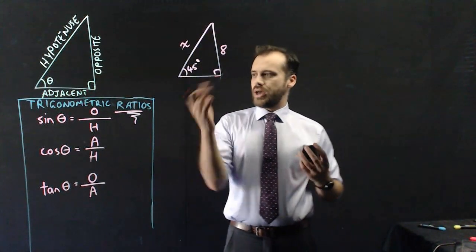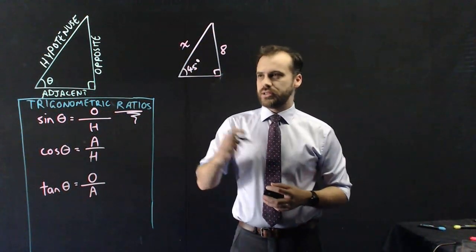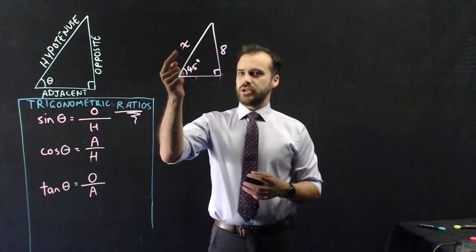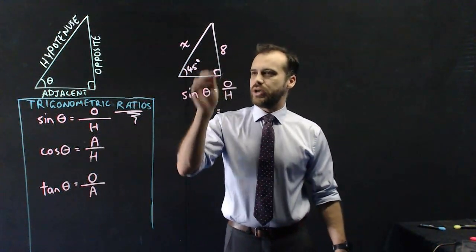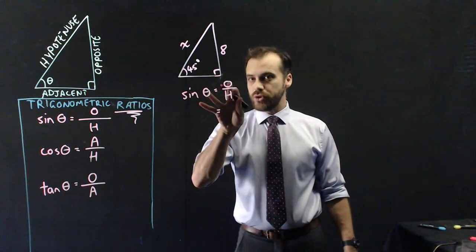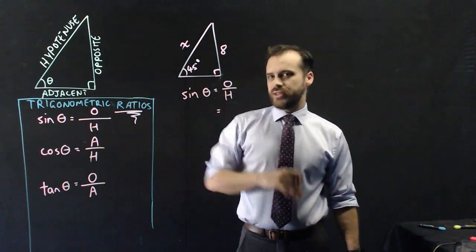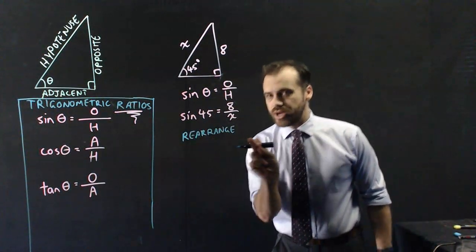Here's a triangle. We can use a trigonometric ratio to find X. This is opposite and this is hypotenuse, so it's going to be the sine one. I know the opposite side and I know the angle, but I don't know H. So I can put in the known bits and then find the unknown bit. And now that I've done that, the thing I really need to do next is rearrange.